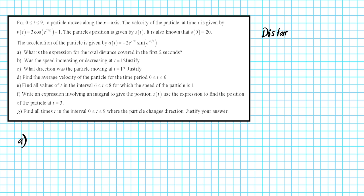Distance from A to B, for some time interval A to B, can be given by the integral from A to B of the absolute value of the velocity, dt. So that's the expression or formula for finding distance. You have to remember that distance is a scalar quantity, but position and displacement are vector quantities — they have signs attached to them. The absolute value here basically indicates that if the particle is going to the left or right, it's considered as covering positive distance.